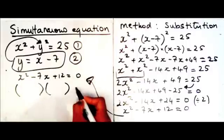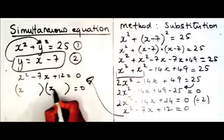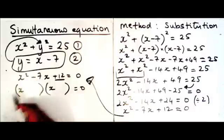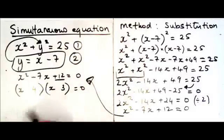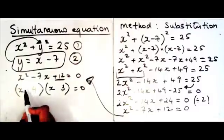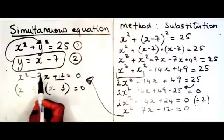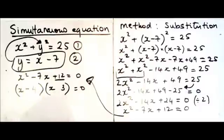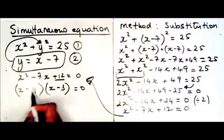To factorize the quadratic x squared minus 7x plus 12 equals 0, draw two brackets each starting with x, because x times x gives x squared. Ask yourself what two numbers multiply to give 12 but add to give minus 7. I can think of 4 and 3: 4 times 3 is 12 and 4 plus 3 is 7. Looking at the middle term needing to be minus 7, I'll put minus 4 and minus 3, since minus 4 plus minus 3 gives minus 7, and minus 4 times minus 3 gives plus 12.